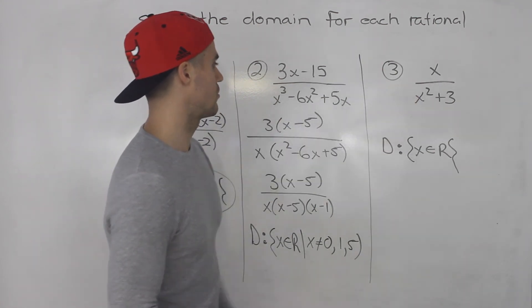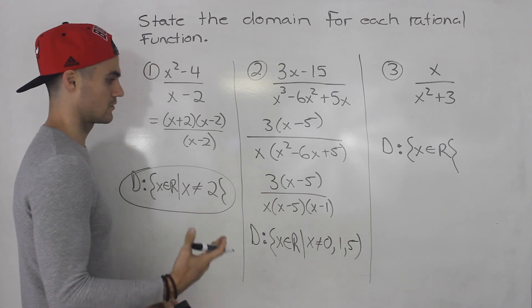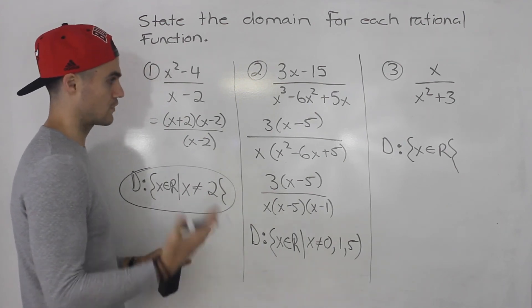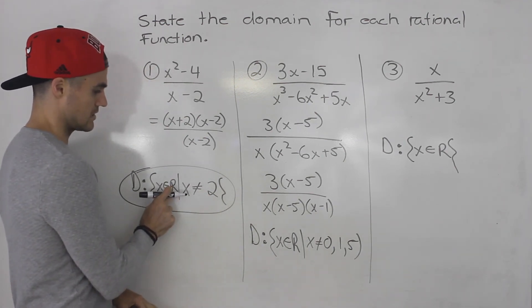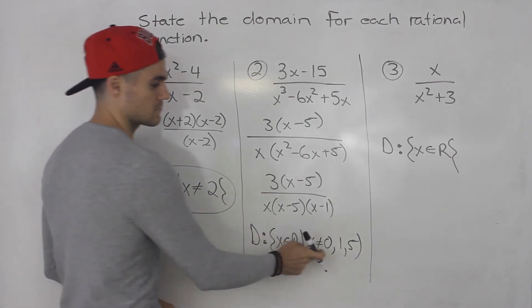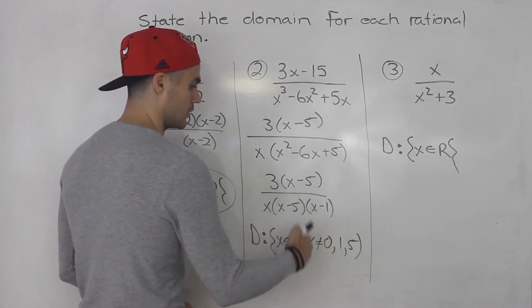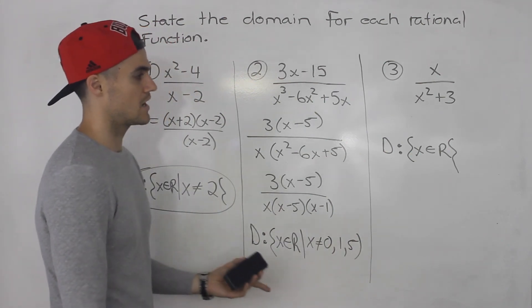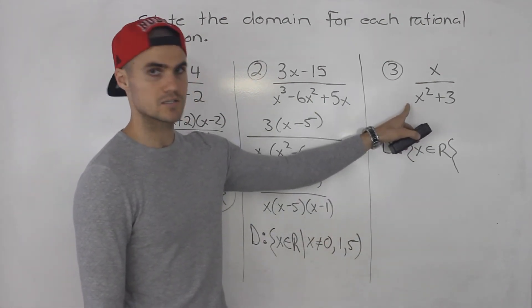All right, so those are the answers. So remember, general format for the domain for a rational function: x∈ℝ, and then x cannot equal the restrictions. Then you list them out in order from lowest to highest. Sometimes you won't even have restrictions, like in this one. So x can just be anything.